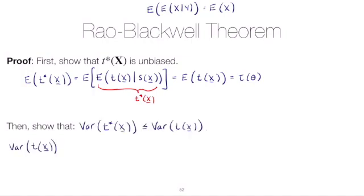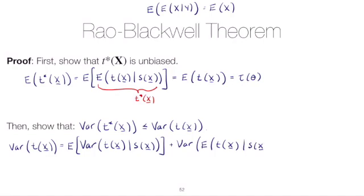Well, a few videos back, we had this law of total variance. And so we'll use that now. And if you remember, that says that the variance of t of x will be equal to the expectation of the variance of t of x conditioned on s of x plus the variance of the expectation of t of x conditioned on s of x.